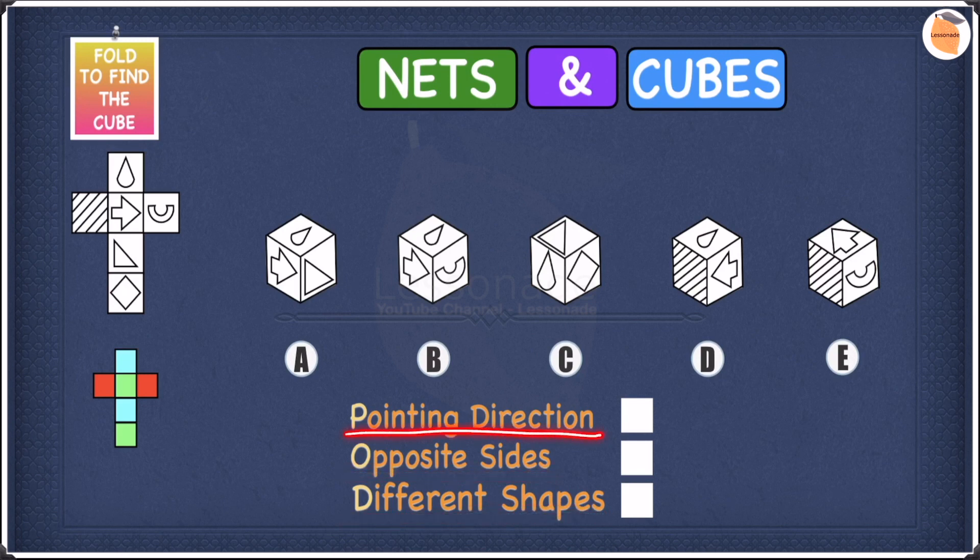Let's start with pointing direction first. In terms of pointing direction, if you have a look at the net we have right here and the arrow, you may notice that this arrow is pointing towards this semicircle and nowhere else. So if we do find an option in which the arrow is pointing somewhere else and not pointing towards this semicircle, then we cross the option off.